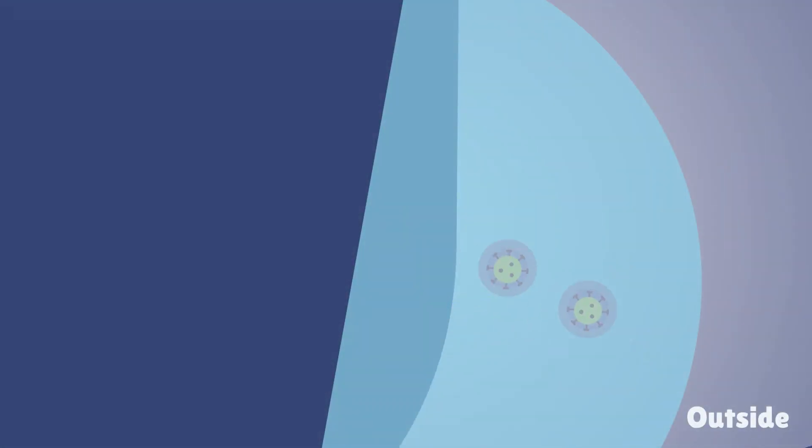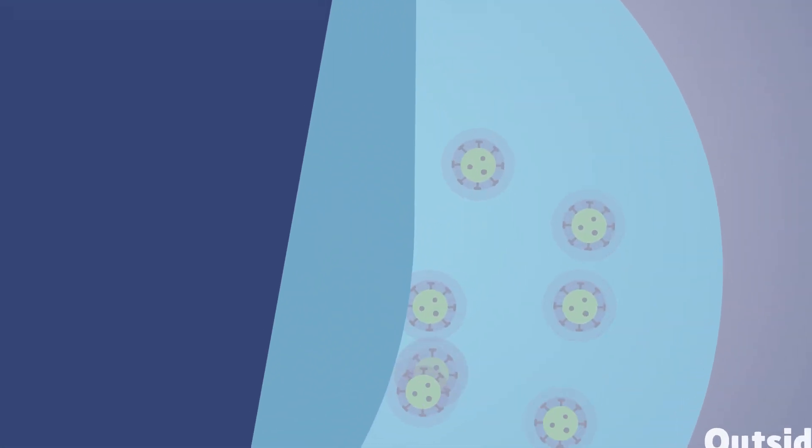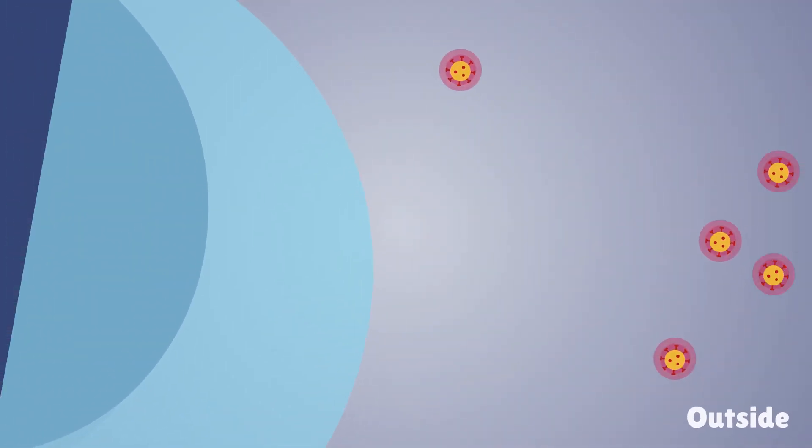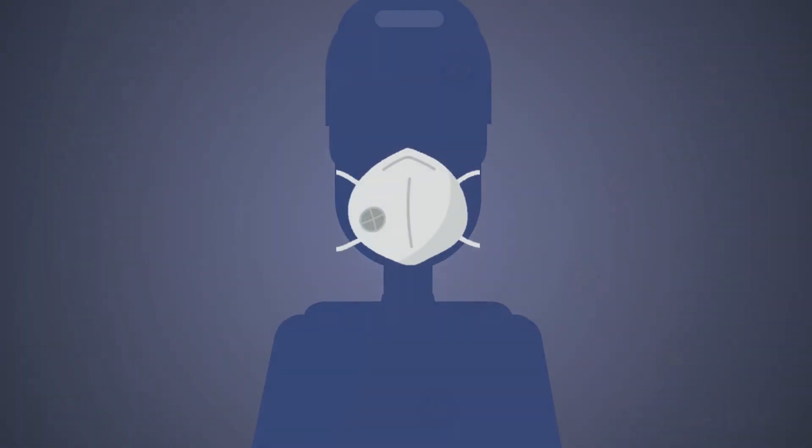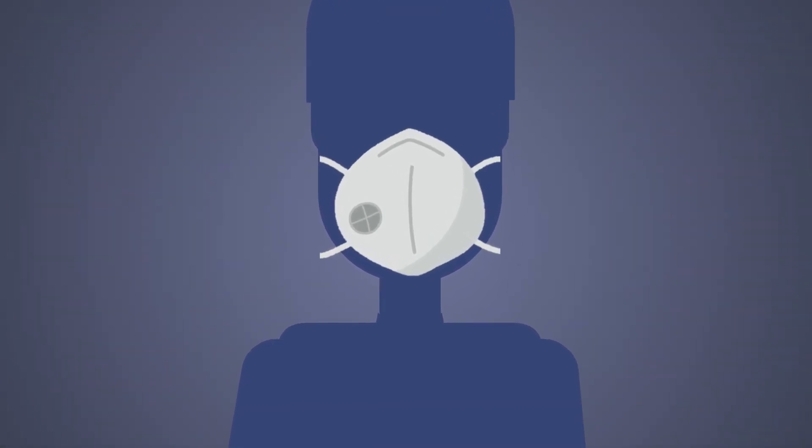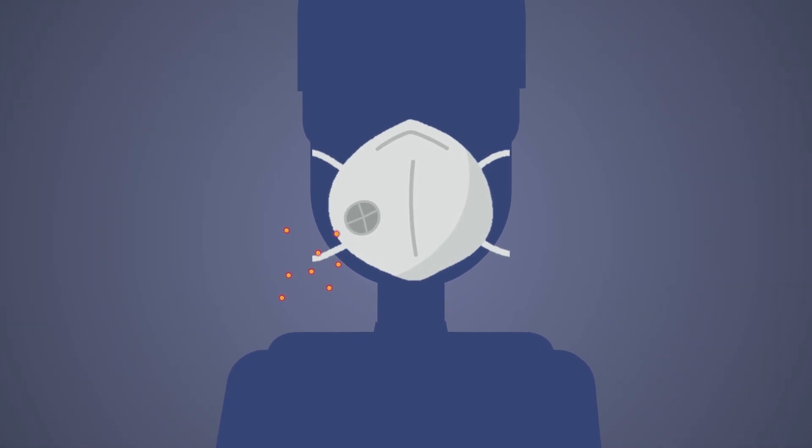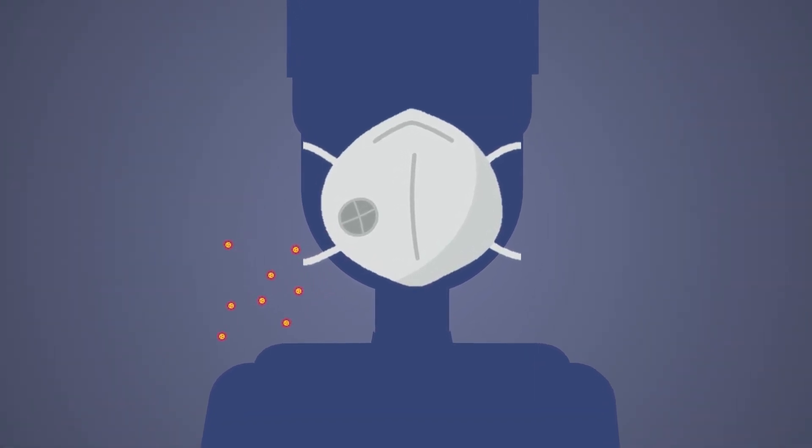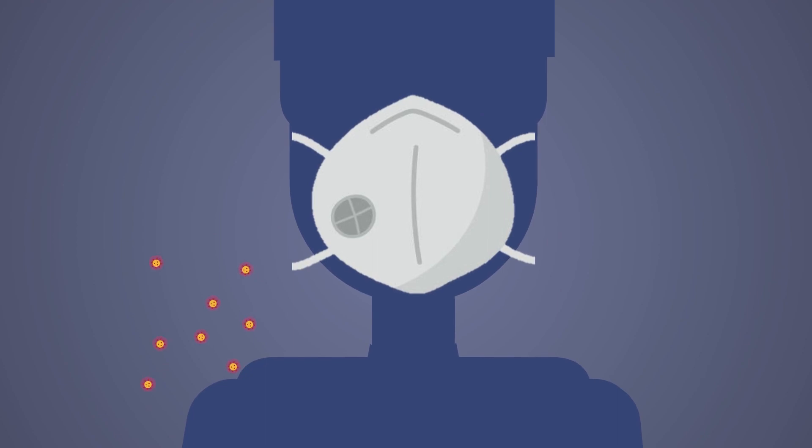Surgical masks are primarily designed to protect the environment from the wearer, whereas respirators are supposed to protect the wearer from the environment. There are also some N95 masks with valves. These are not recommended. While the wearer breathes in filtered air, unfiltered air is pushed out upon exhalation, and this negates protection of others if you are contagious.